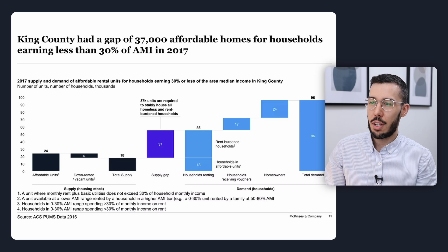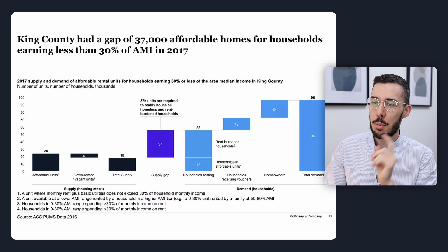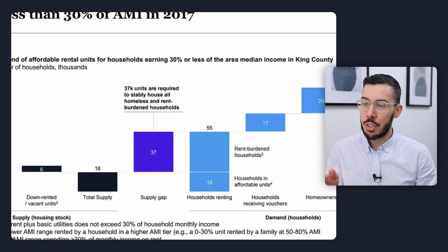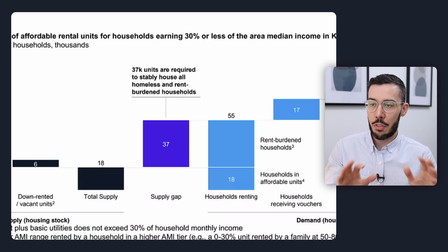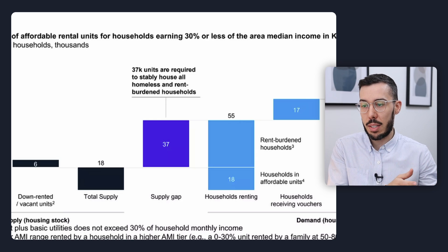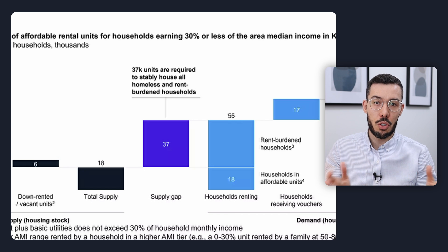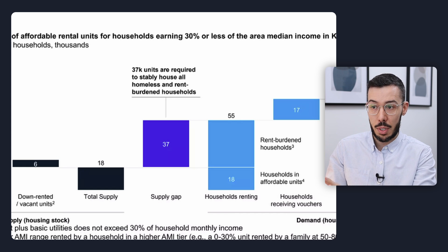Now let's look at a McKinsey example of the gap waterfall chart. This slide explains the supply and demand of affordable units in Kings County. Focusing on the middle section in rich blue, you can see they've used the waterfall to highlight a supply gap — the difference between total supply and households renting — with a callout to emphasize it. This slide sits at the end of the complication part of the storyline, and the slides that follow all explain how to address that supply gap.